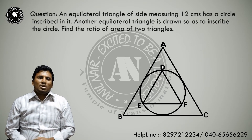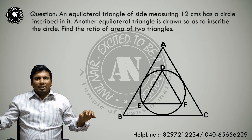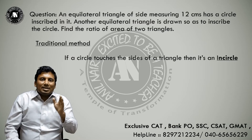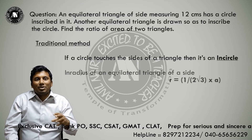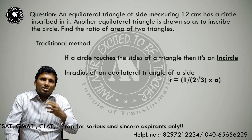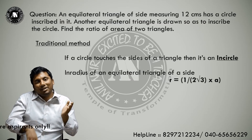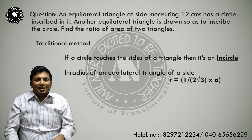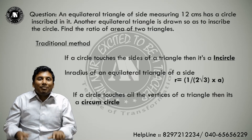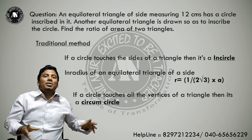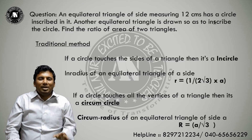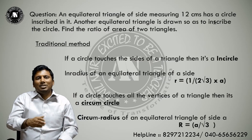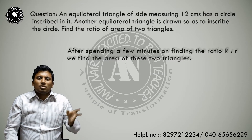Generally, most students will try to solve this question like this. There is a triangle; inside, there is a circle that is inscribed. If there is any circle which touches the sides of a triangle, it is considered to be an in-circle. So we will find out the in-radius of the equilateral triangle. Then, in that circle, another equilateral triangle is inscribed, so that circle becomes the circum-circle for the inner equilateral triangle. We will use the concept of circum-radius. Using small r and capital R, we will find the ratio of the areas.